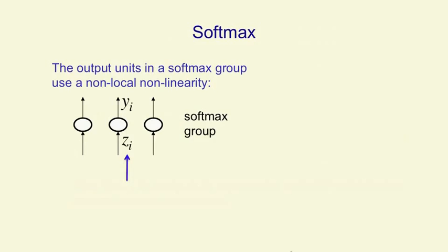So the way the units in a softmax group work is that they each receive some total input that they've accumulated from the layer below. That's zi for the ith unit, and that's called the logit.